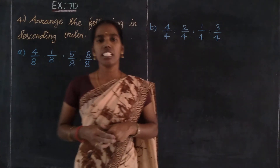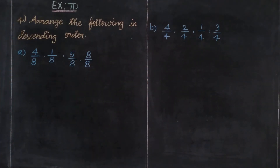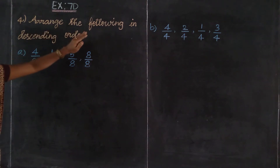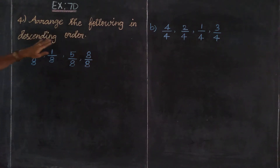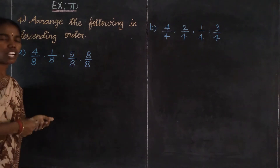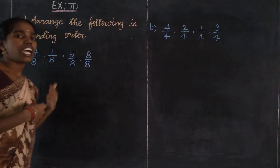Welcome students. This is exercise 730, the 4th Roman problem. Arrange the following in descending order. It is the 4th Roman problem.